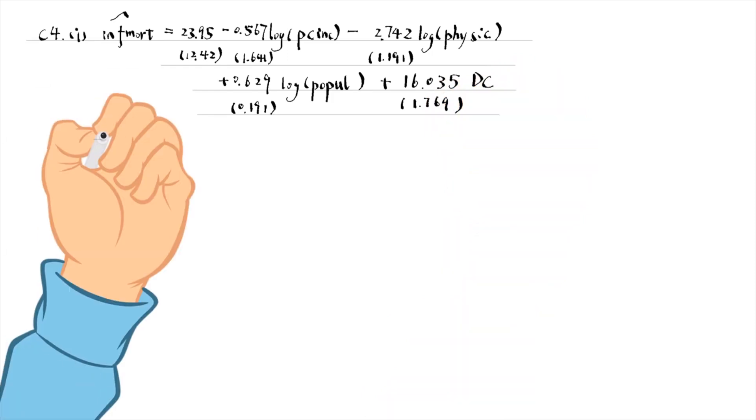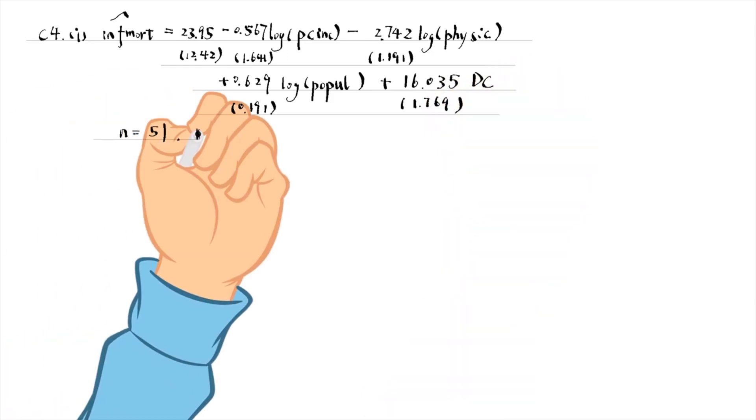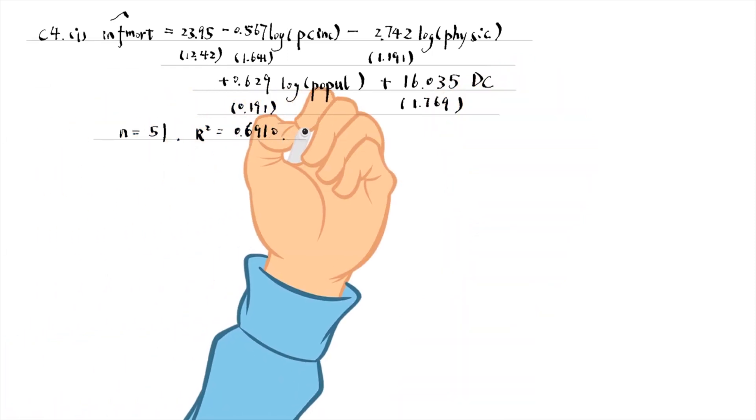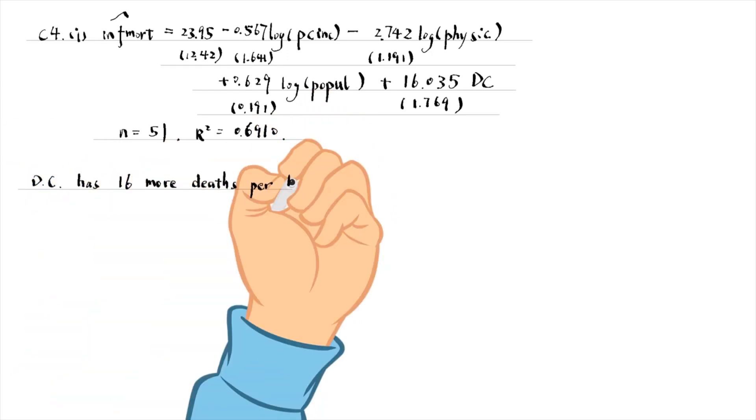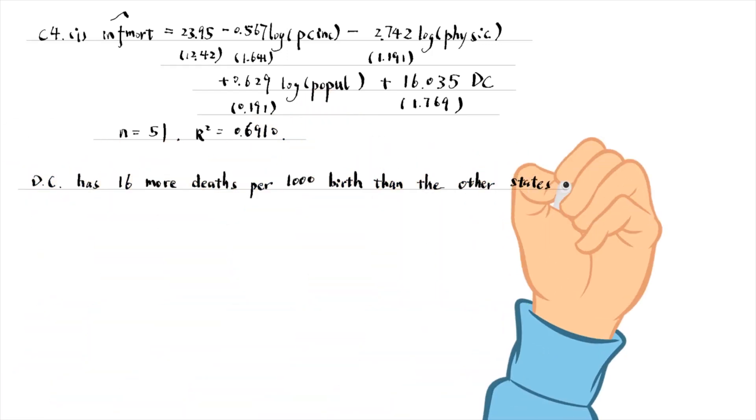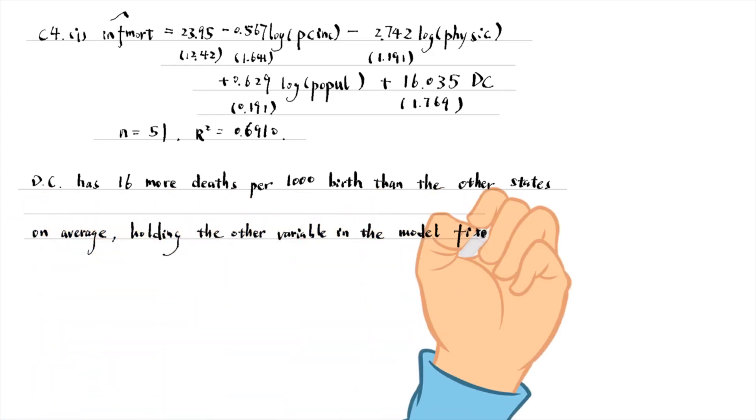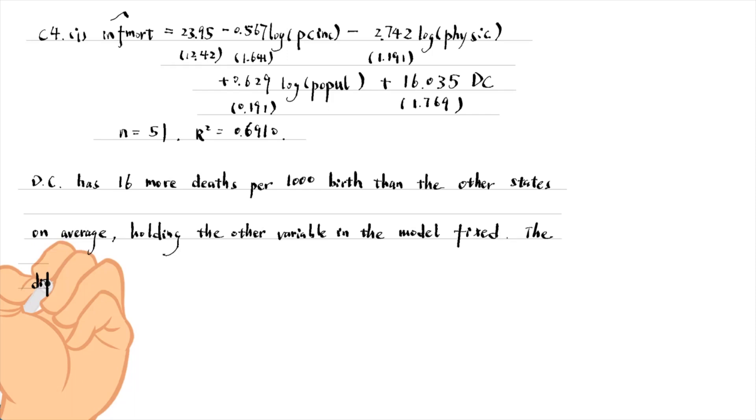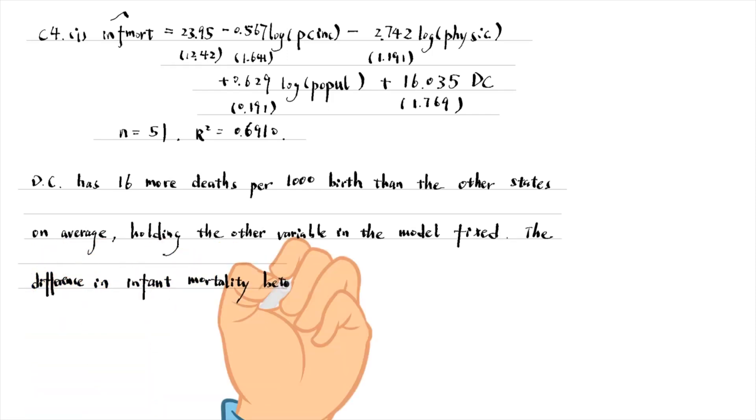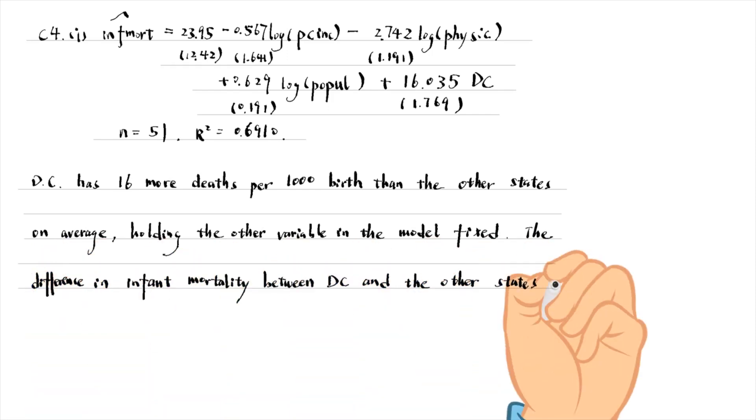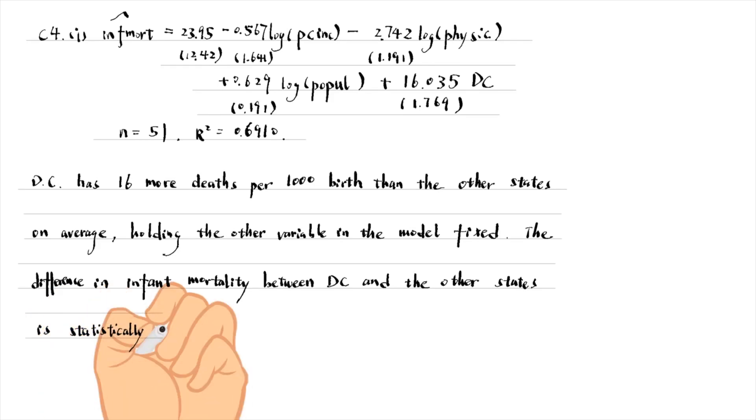The coefficient on DC implies that DC has 16 more deaths per 1000 births than the other states on average, holding the other variables in the model fixed. The difference in infant mortality between DC and the other states is statistically significant at the 1% level.